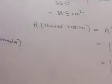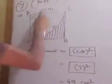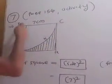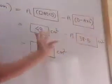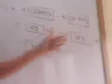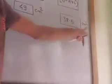Last answer: Area of shaded region equal to area of square minus area of sector. 49 cm square minus 38.5 cm square. So subtraction is 10.5 cm square. Area of shaded region is 10.5 cm square.